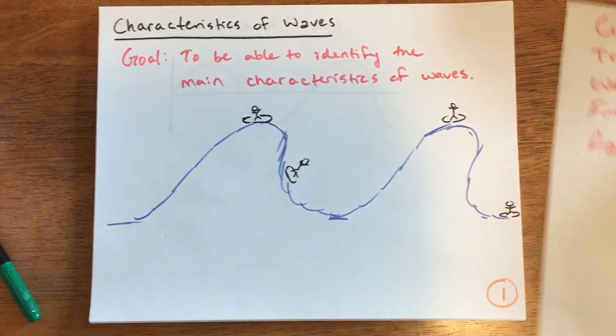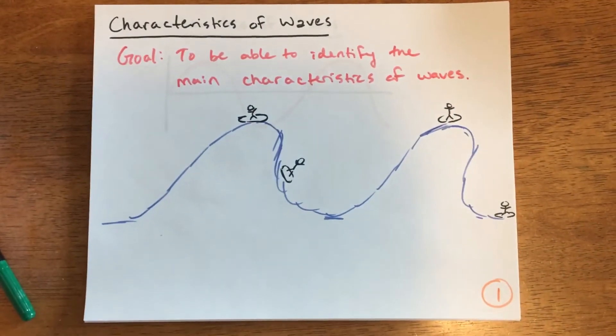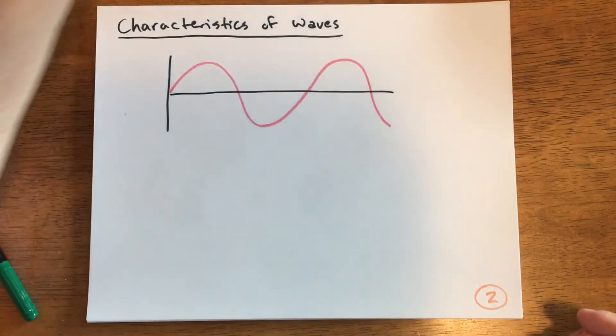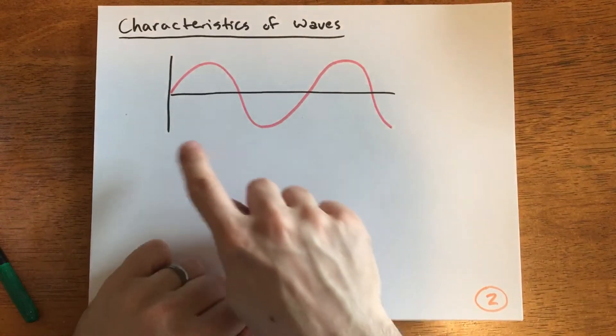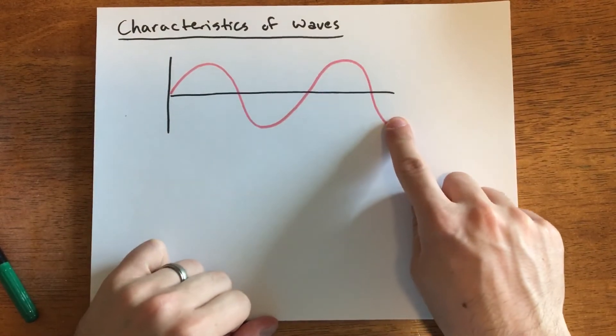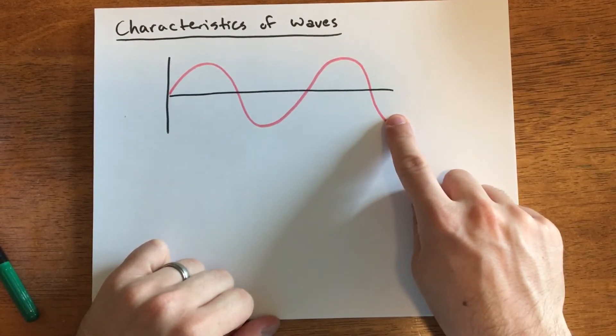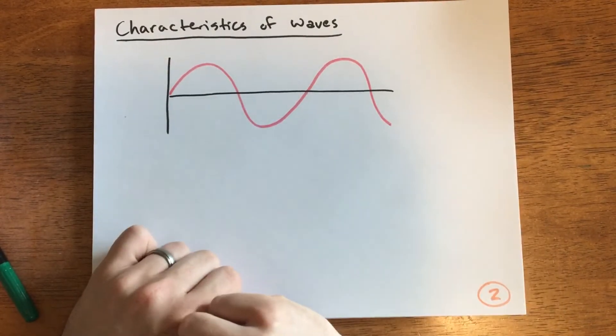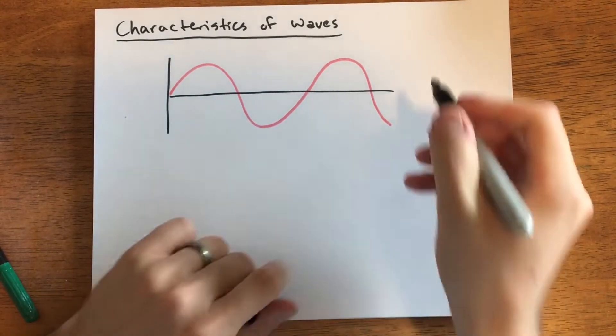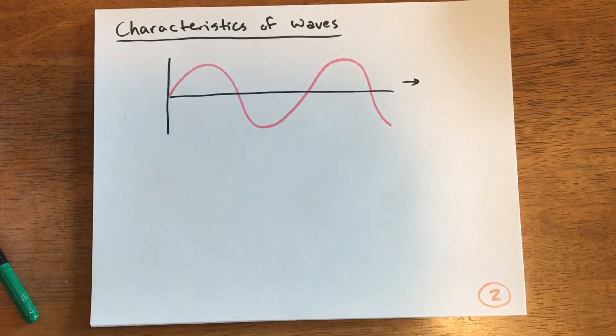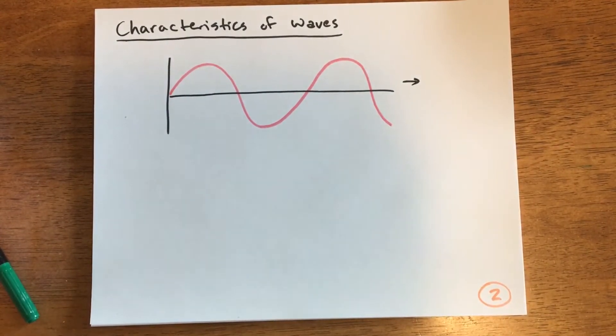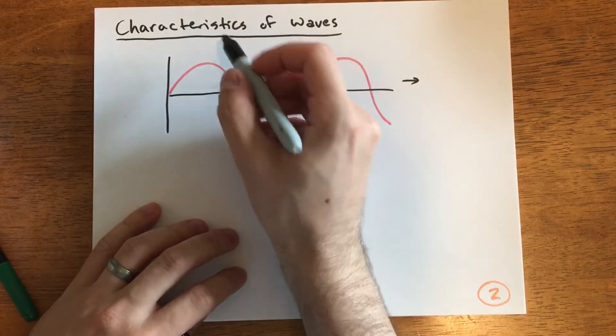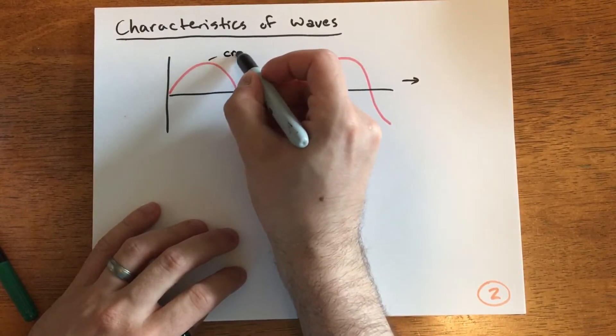Let's identify the main characteristics we need to discuss. This is the more typical science diagram of a wave. This arrow represents that the wave is moving to the right. The first thing we'll label is the top or high point, sometimes called the peak. We call that the crest.